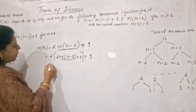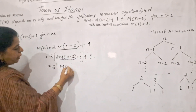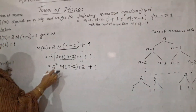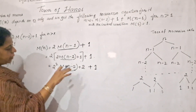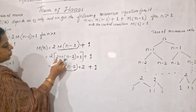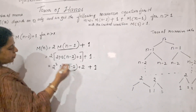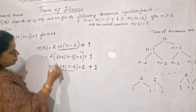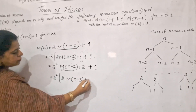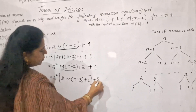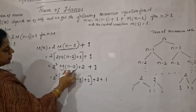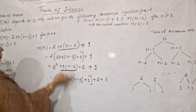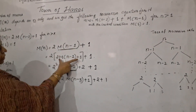When you open this bracket, you get 2 squared times M(N-2), plus 2 into 1, plus 1. Now further, M(N-2) can again use backward substitution. Keeping 2 squared outside, for M(N-2) it will be 2M(N-3) + 1, so you get 2 cubed times M(N-3) plus 2 squared plus 2 plus 1. M(N-1) was replaced with 2M(N-2) + 1, and same way M(N-2) gets replaced with 2M(N-3) + 1.